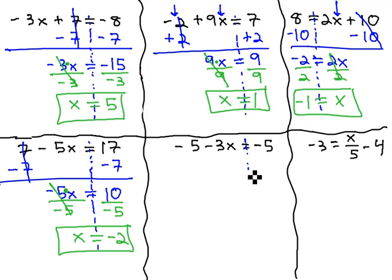In this next example, we need to get rid of 5 negatives as we start getting the x alone. Get rid of the 5 negatives with 5 positives. This gives us negative 3x equals negative 5 plus 5 is 0.